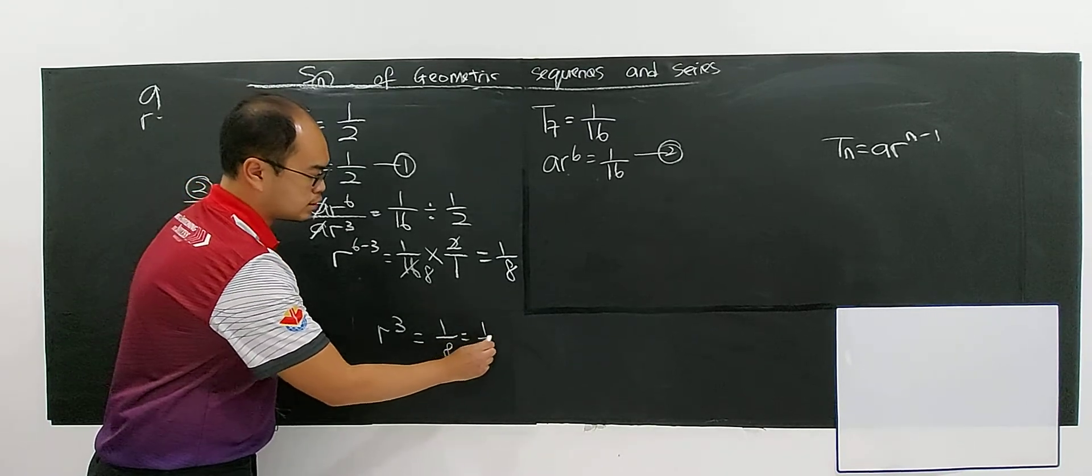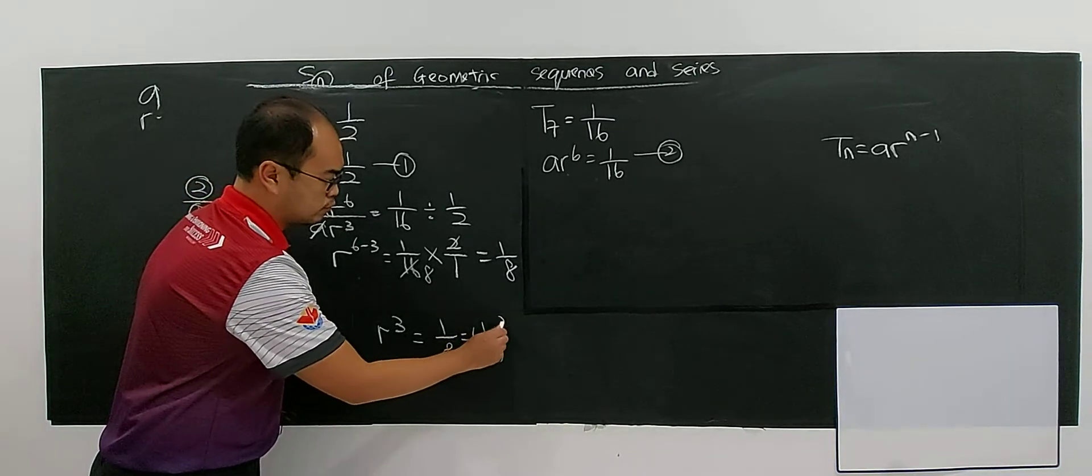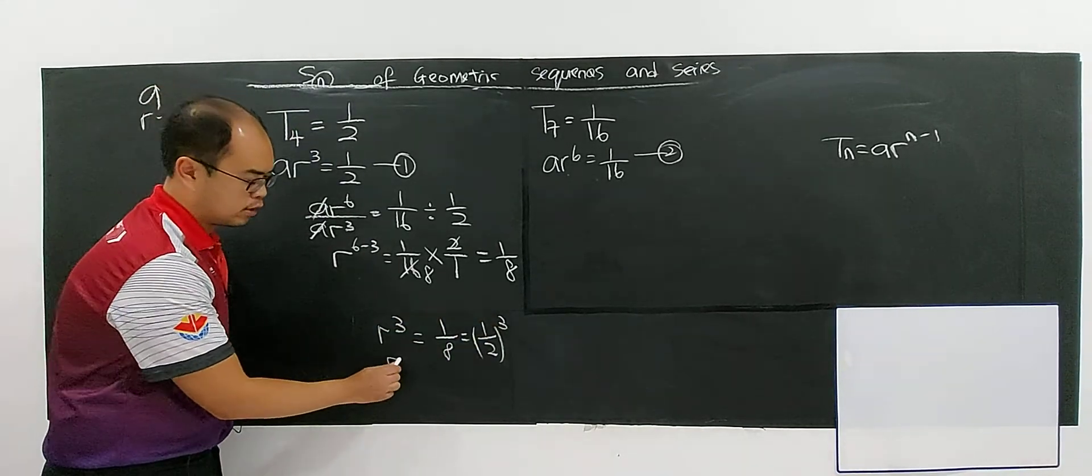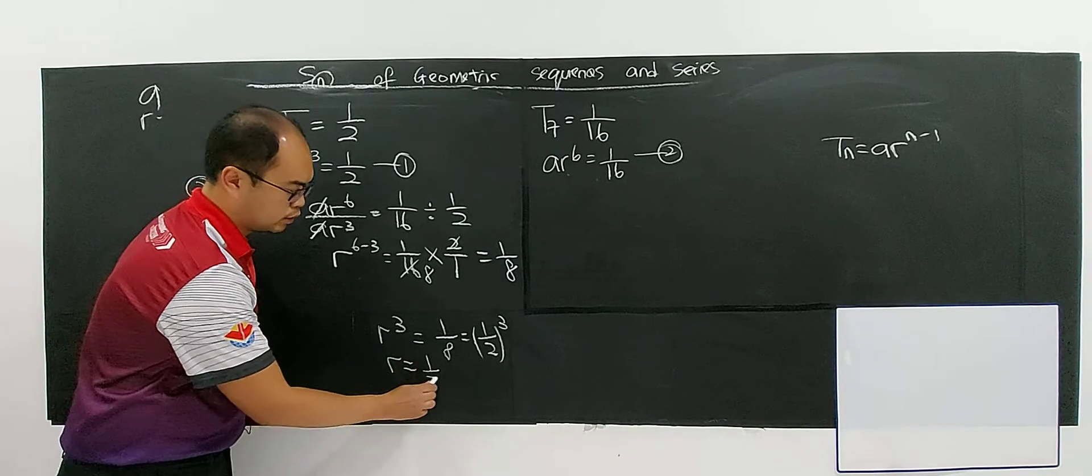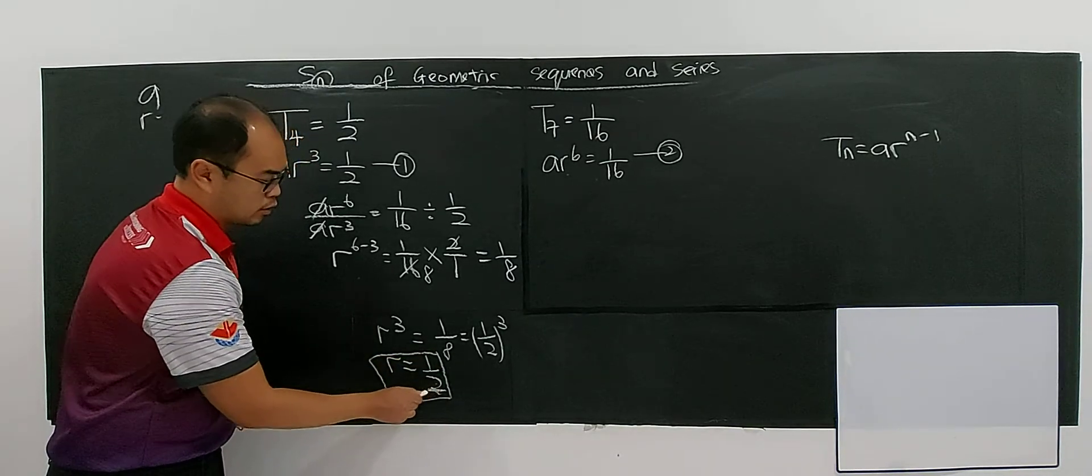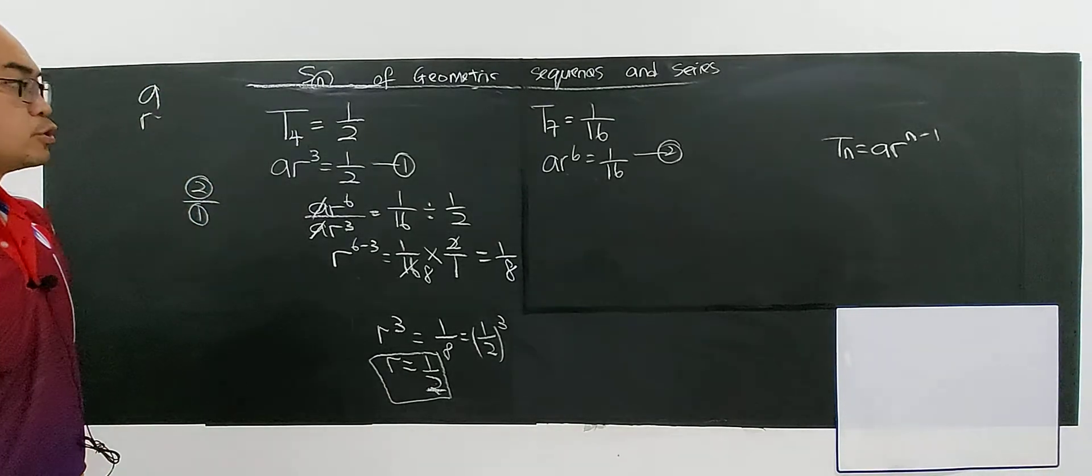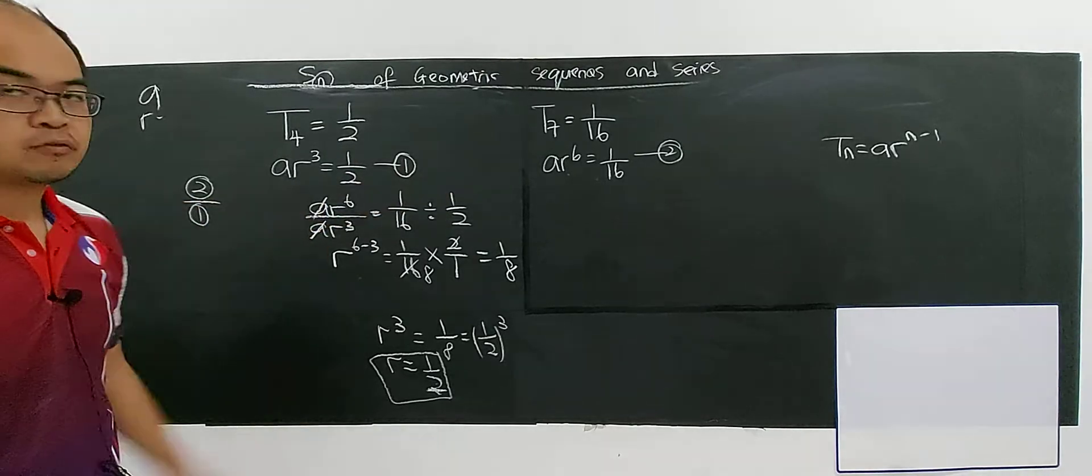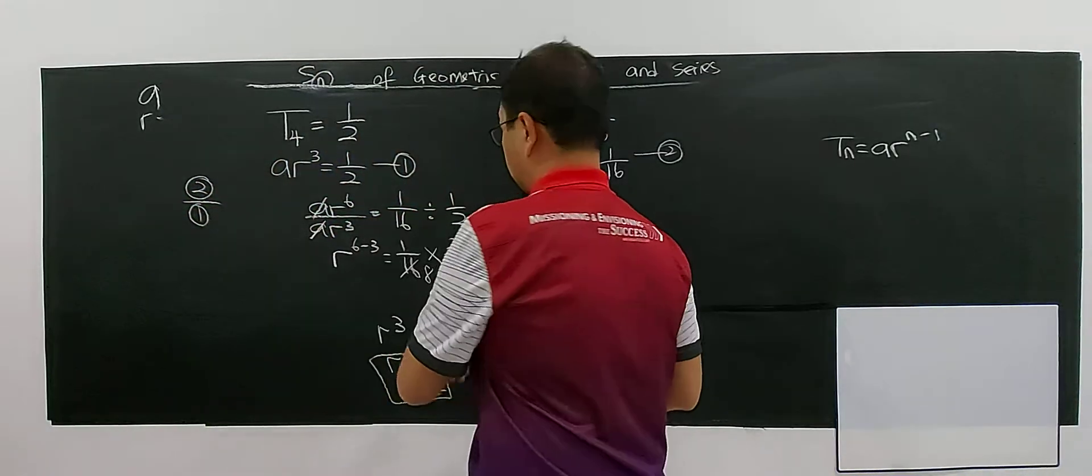So 1 over 8 is 1 over 2 to the power of 3. Since this is an odd power, there are no plus minus. You must understand why. So R is 1 over 2. You have got your value of common ratio. So same thing, you substitute this one into 1 or 2 to get the value of A.